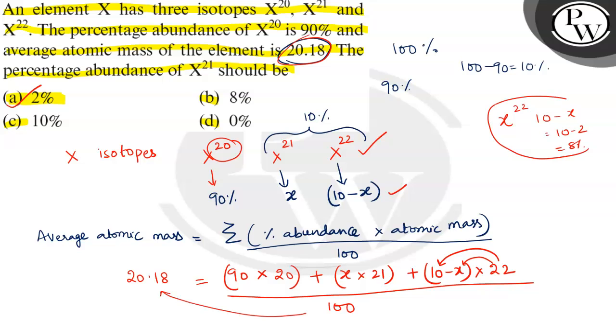But in the question, we want X^21 only. So X^21 is 2%. This is the only answer. Option A is correct. Hope you understood. Good luck.